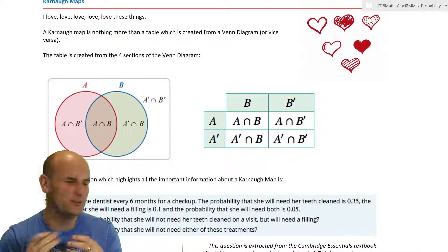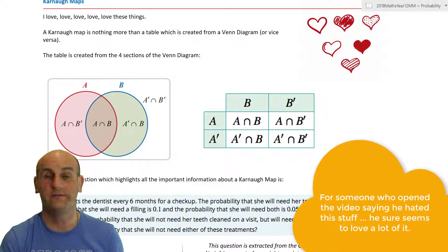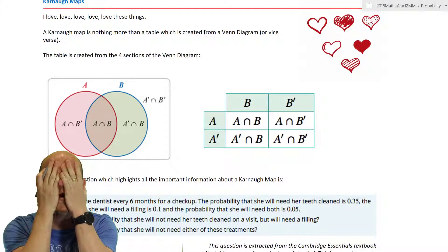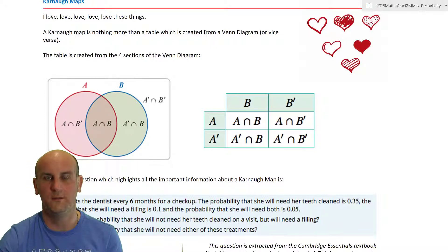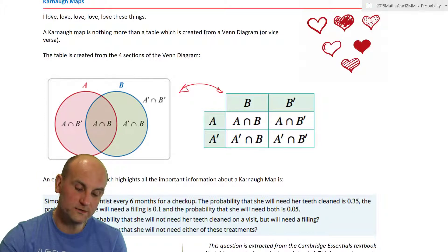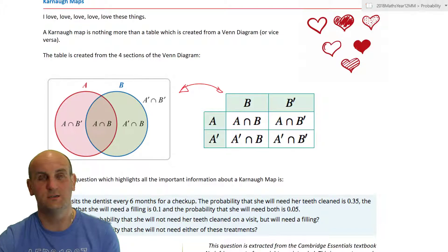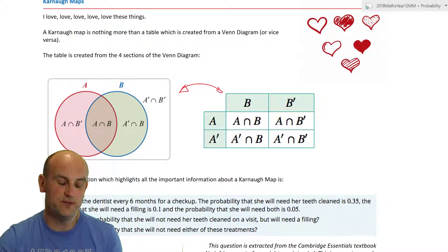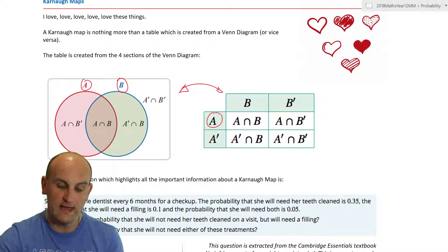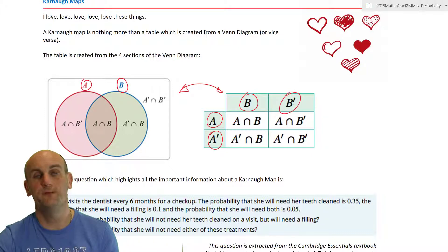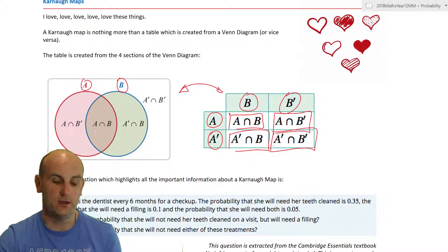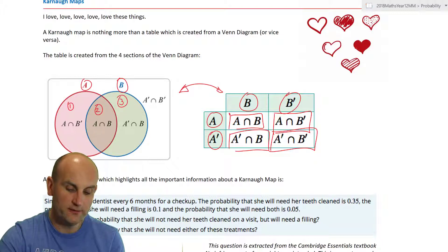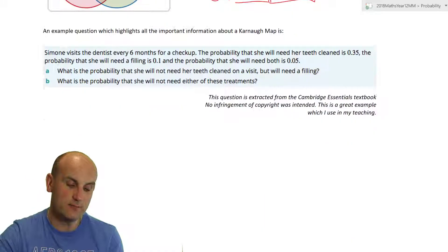Karno maps — also called probability tables — are also awesome. When I first saw them I thought they'd be too hard, but they're great. A Karno map is nothing more than a table created from a Venn diagram. You have probability of A and probability of B as column and row headers, along with their complements, and each cell corresponds to one of the four areas of the Venn diagram, including the area outside.